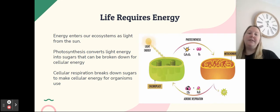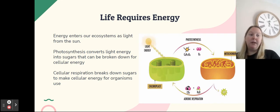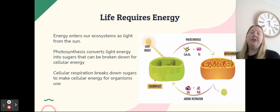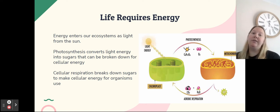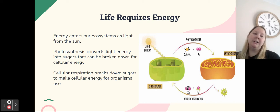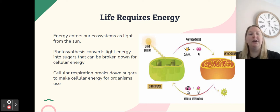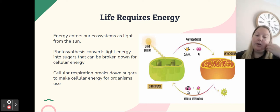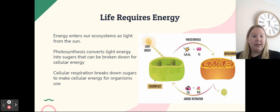Life requires energy — we cannot do anything without our cells having energy. Energy first enters our ecosystem in the form of light from the sun. Photosynthesis converts that light energy into a sugar that can be easily broken down for cellular energy use. Then cellular respiration breaks down that sugar further into chemical energy that our cells use.